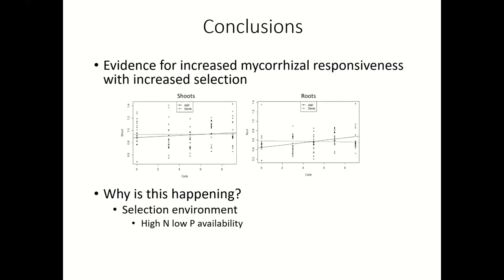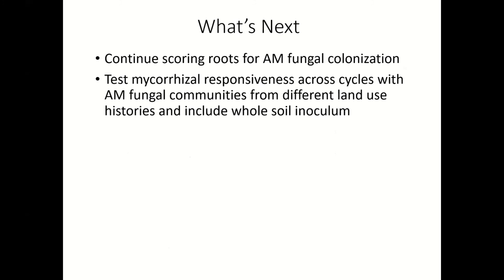So we do have some evidence for increased mycorrhizal responsiveness with increased selection. Why is this happening? There are probably a number of reasons, but one thing we've been discussing is that it could potentially be the selection environment. Here in Salina, there's high nitrogen availability but low phosphorus availability. If you have a partner that can get at that phosphorus, you're probably going to look better in the field. We also want to score all of these roots and look at AM fungal colonization to see if that matches up with the biomass responses.